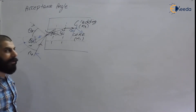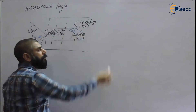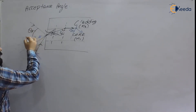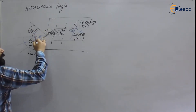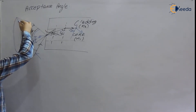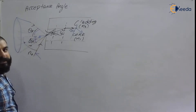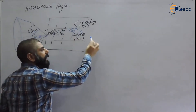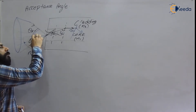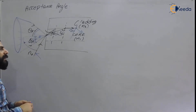This maximum angle with the axis of the optical fiber at which light can enter in order to propagate through the core is called the acceptance angle. Any light falling within this acceptance angle will propagate 100% through the core via total internal reflection. The angle should not be more than the acceptance angle. Now we are going to derive the acceptance angle formula.